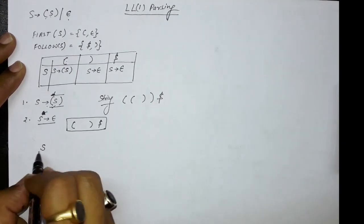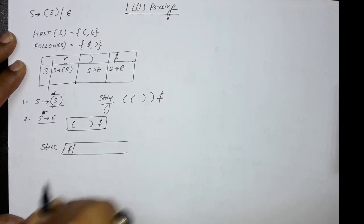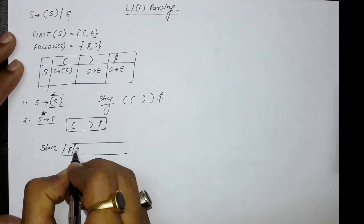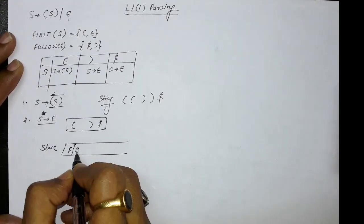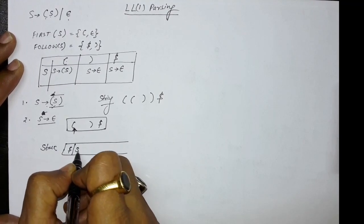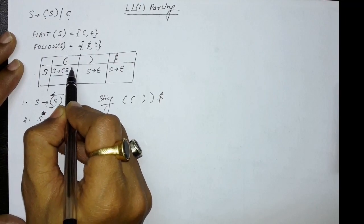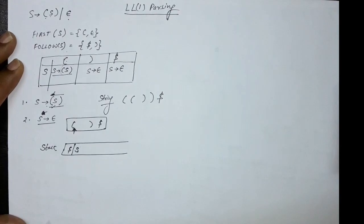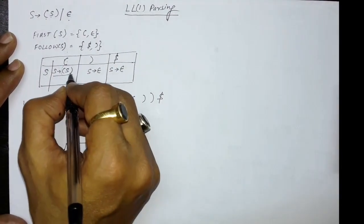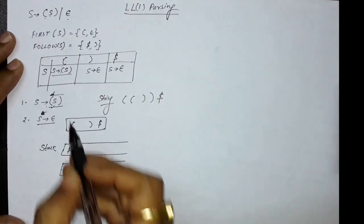Now take a stack. Initially the stack contains only dollar, so dollar is at the top. Then push the start symbol S on the stack. Now see S on top of stack and opening bracket as the current input symbol. Go to row S and column opening bracket in the table — you find S → opening bracket S closing bracket. Replace S with the right-hand side written in reverse order: closing bracket, then S, then opening bracket.